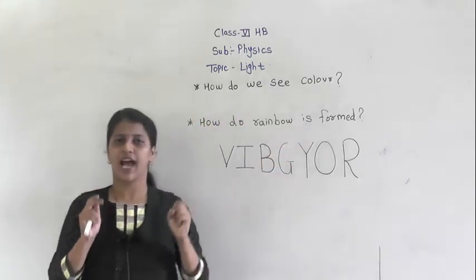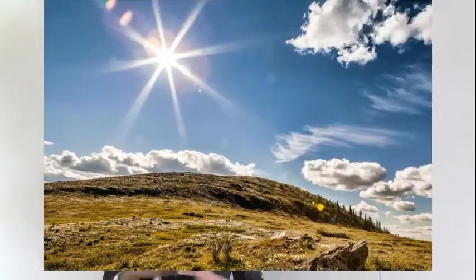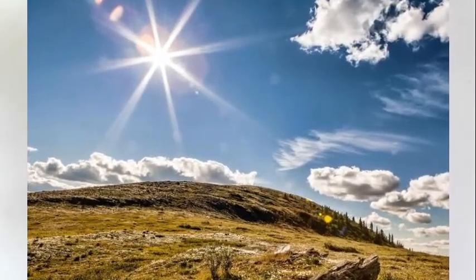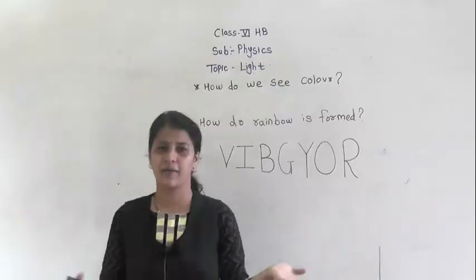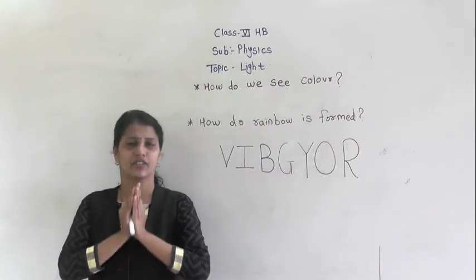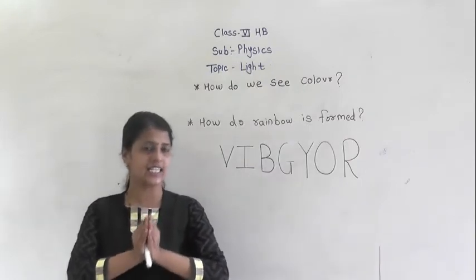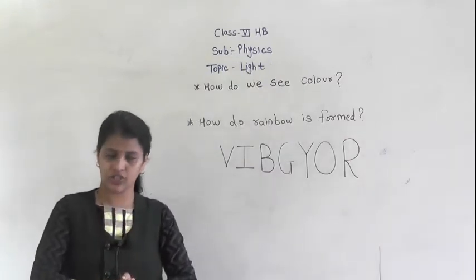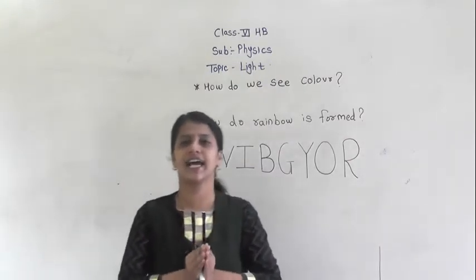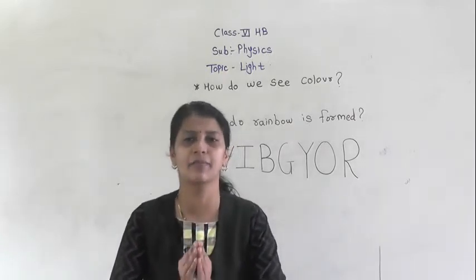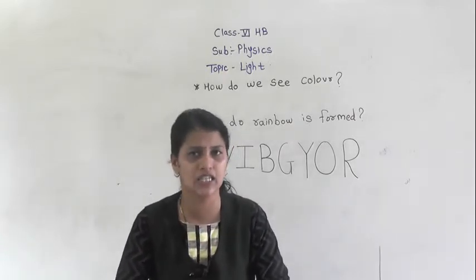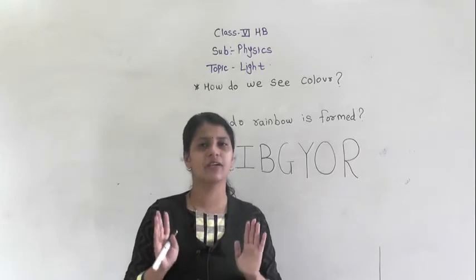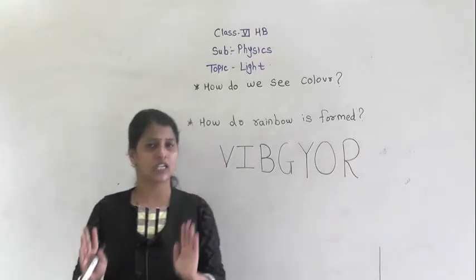Have you seen the sunlight? Yes, sunlight appears white in color. But actually, the sunlight consists of 7 main colors.